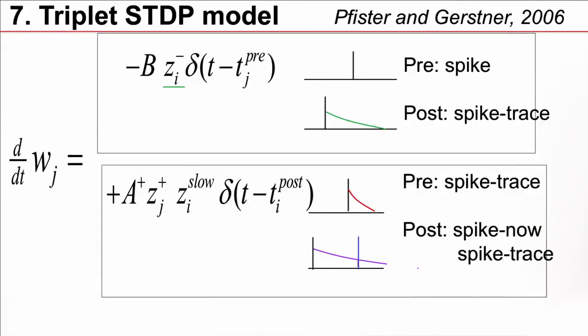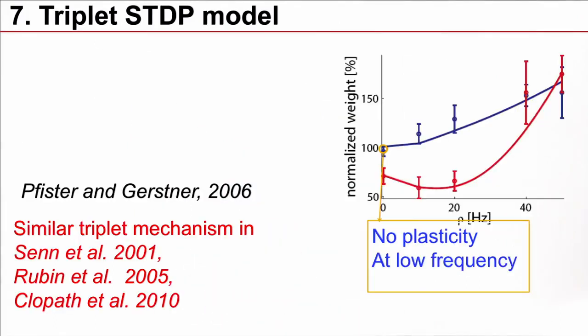Now, for the LTD part, we keep the same rule as before. A post-synaptic spike leaves yet another trace and the pre-synaptic spike reads out the value of this trace and gives a weight change with a negative parameter. So, with this model, one can account for this effect that there is no plasticity at very low frequencies. And this is a very common phenomenon that has been found in several experiments and that's also found in many other plasticity models.